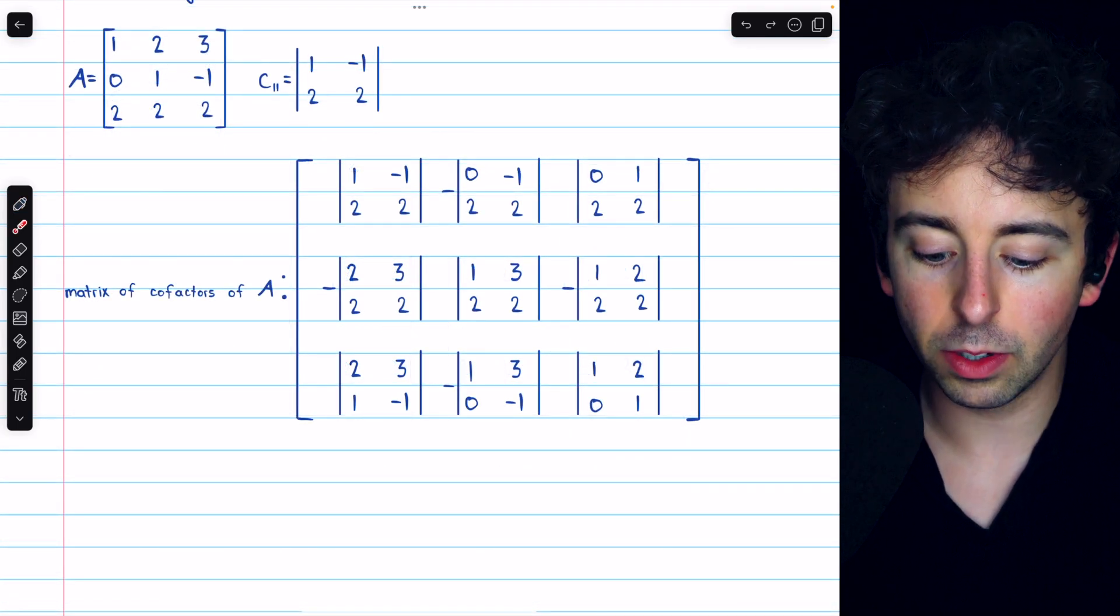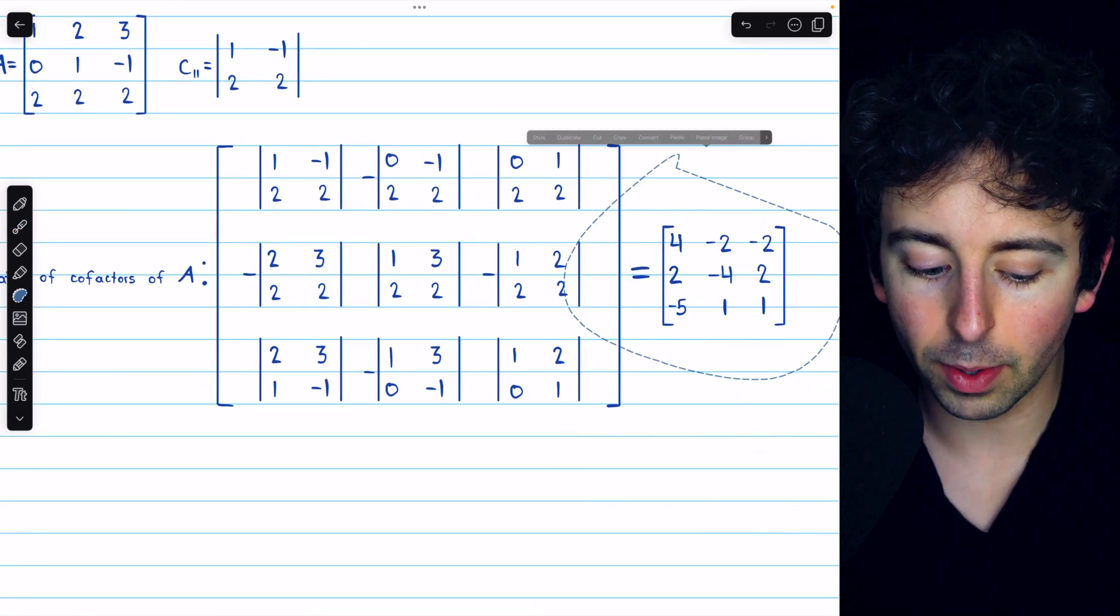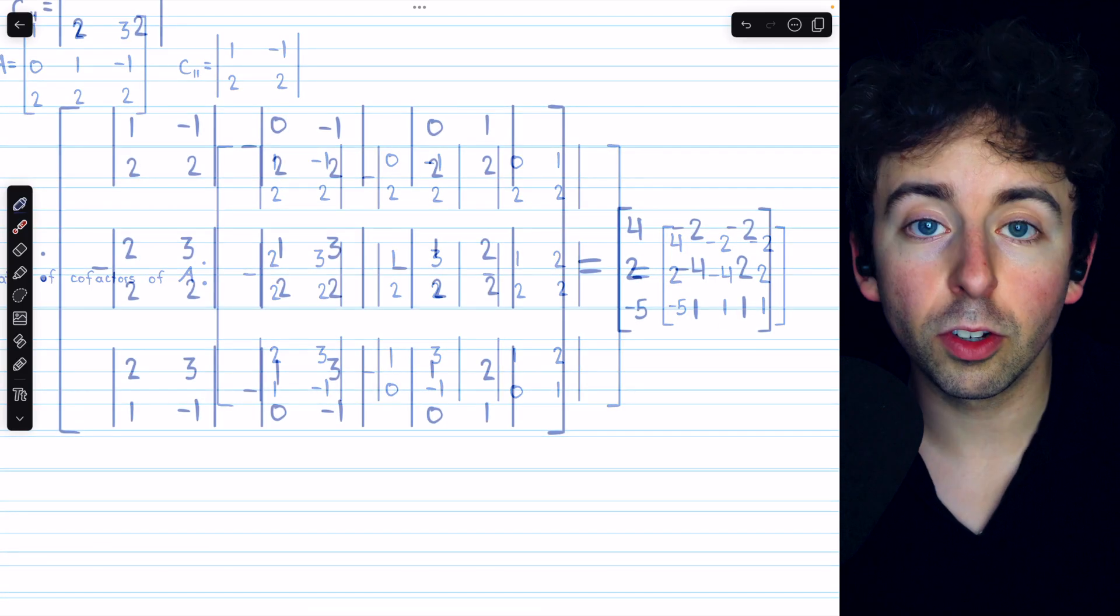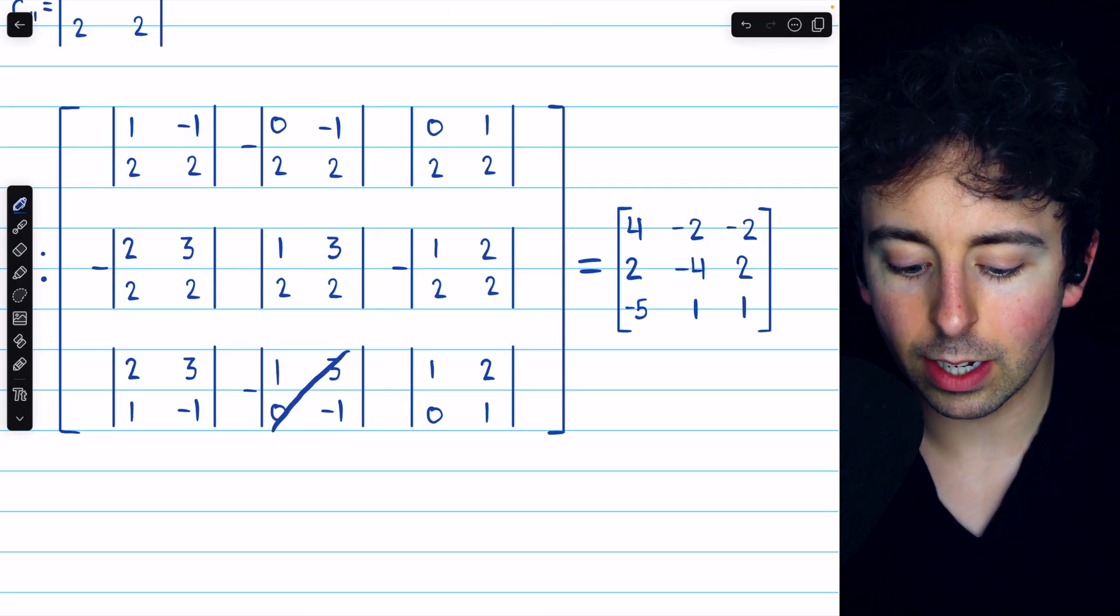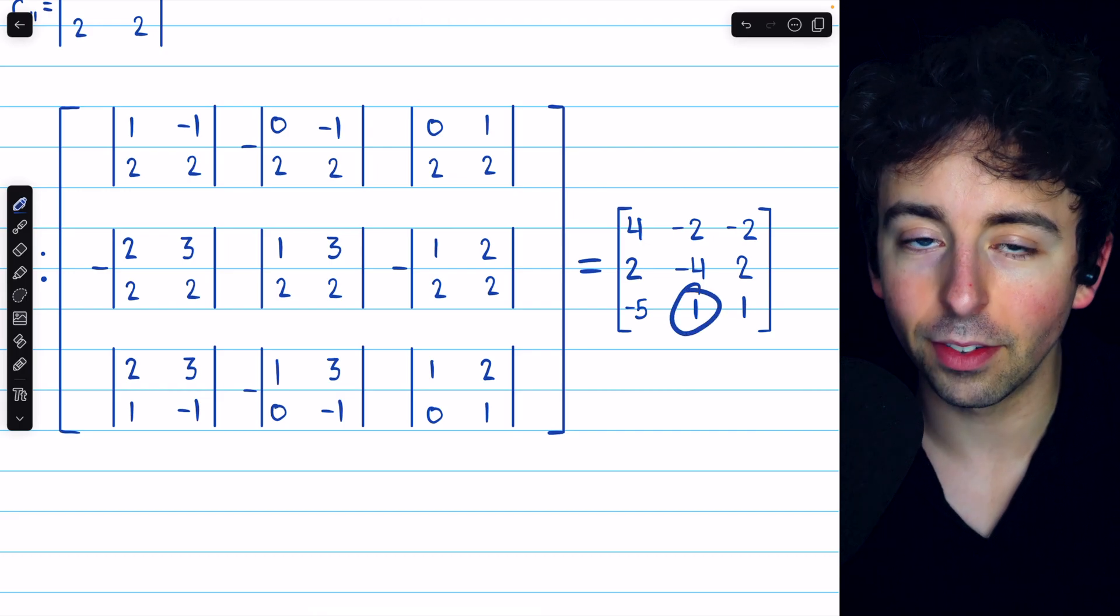It's straightforward now to compute all nine determinants to find the matrix of cofactors. Doing the computations, you can verify that we arrive at this matrix. Just for example, this entry here is 1 times negative 1 minus 3 times 0 times negative 1, so that is positive 1.